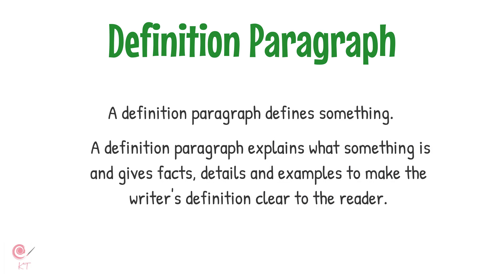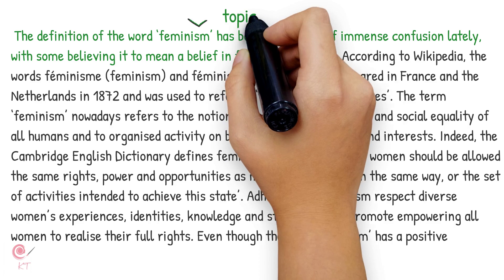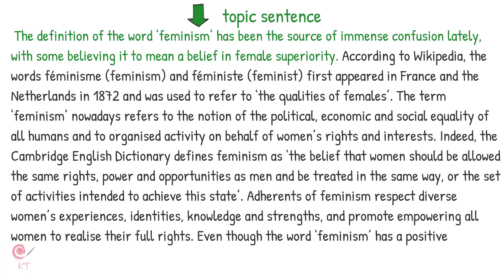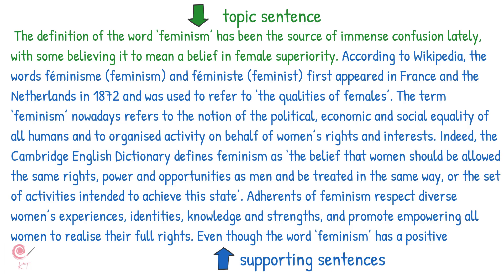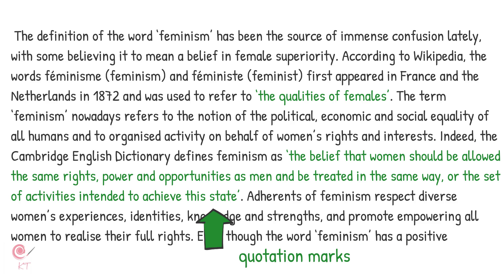A definition paragraph explains what something is and gives facts, details and examples to make the writer's definition clear to the reader. The starting point for a definition paragraph is a simple definition, which becomes the topic sentence of the paragraph. Topic sentences give a simple definition, while supporting sentences give more information through the use of examples, description or explanation. If you are going to use a definition that is not your own, you must put the definition inside quotation marks so the reader knows these words are not yours.